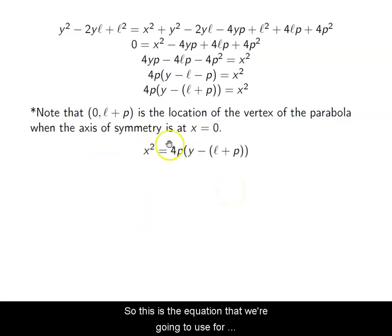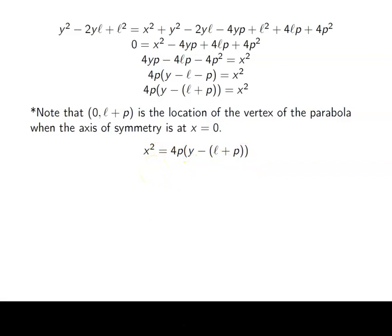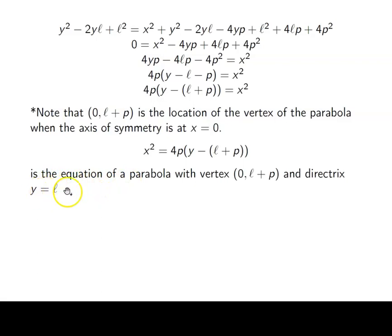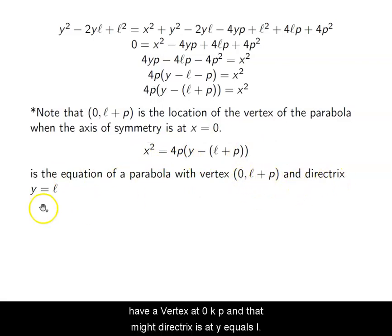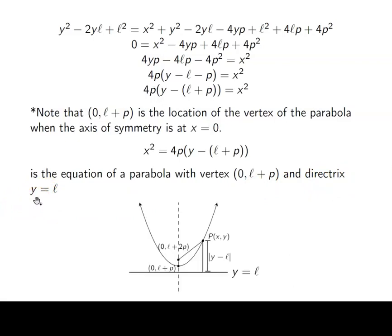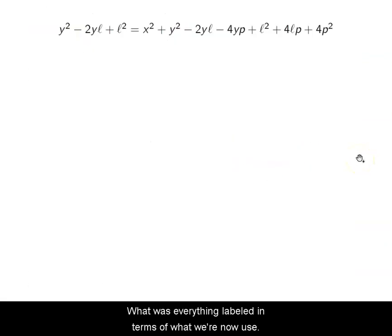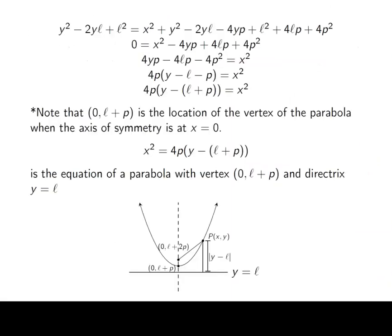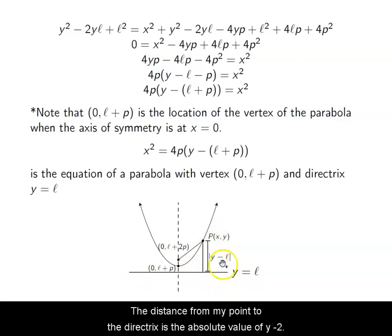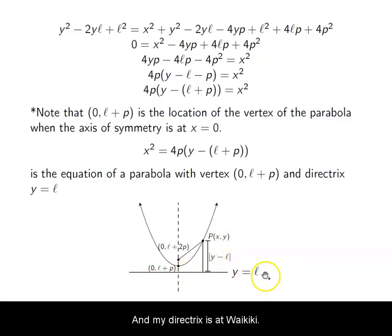This is the equation we'll use in this section when the axis of symmetry is on the y-axis. This form applies when the vertex is at (0, L+P) and the directrix is at Y = L. To recap the labeled diagram: the vertex is at (0, L+P), the focus is at (0, L+2P), and the distance from any point to the directrix equals the distance from that point to the focus.